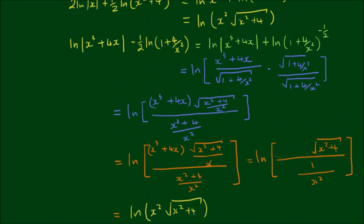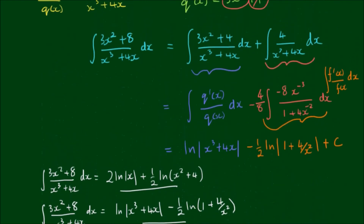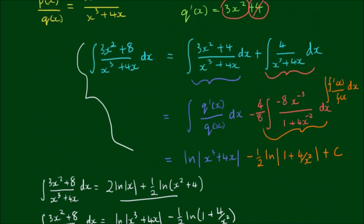Scrolling back up, we can confirm the two methods give the same answer. All of that algebra was just a check, and I think you'll agree that the second method — the f'/f approach — is a bit more efficient than the partial fractions approach, even though the intermediate answer looks a little more complicated.